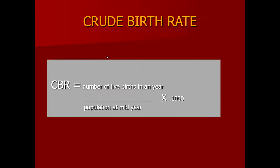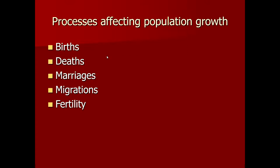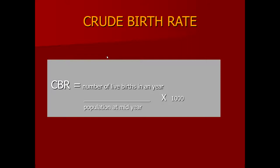The number one factor affecting population growth is births. To calculate births, the most effective indicator is the crude birth rate. As the name suggests, it is a crude indicator. It is based on the total number of live births which have occurred in a population in a specific period of time. We call it a crude rate because crude rates do not reflect age specification and gender specification, and they cannot be used for comparisons at the national and international level.